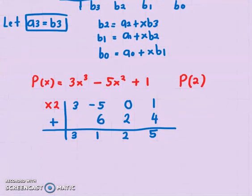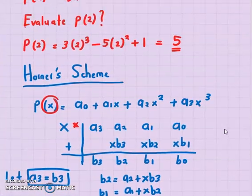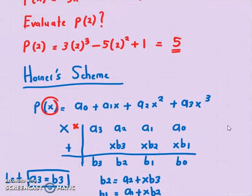There you go. So your final answer, P(2) equals to 5, which is similar if you substitute the value of x equals to 2 to this polynomial. It will be the same thing.